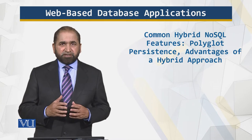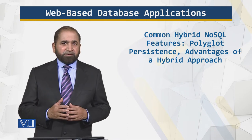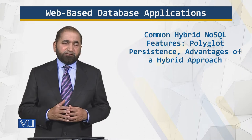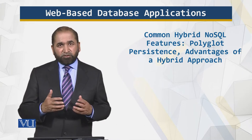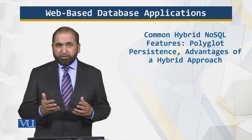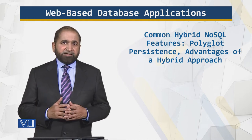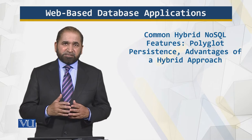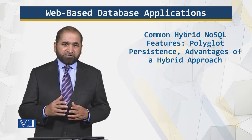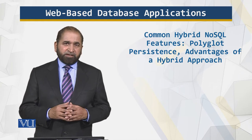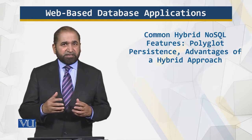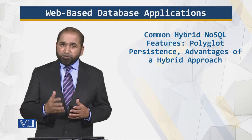If we have a key-value based feature that supports indexing, and of course the document model also supports indexing, the point I'm trying to make is that NoSQL is already hybrid. But one has to do things in a formal way so that the hybrid ability and the features are used properly.